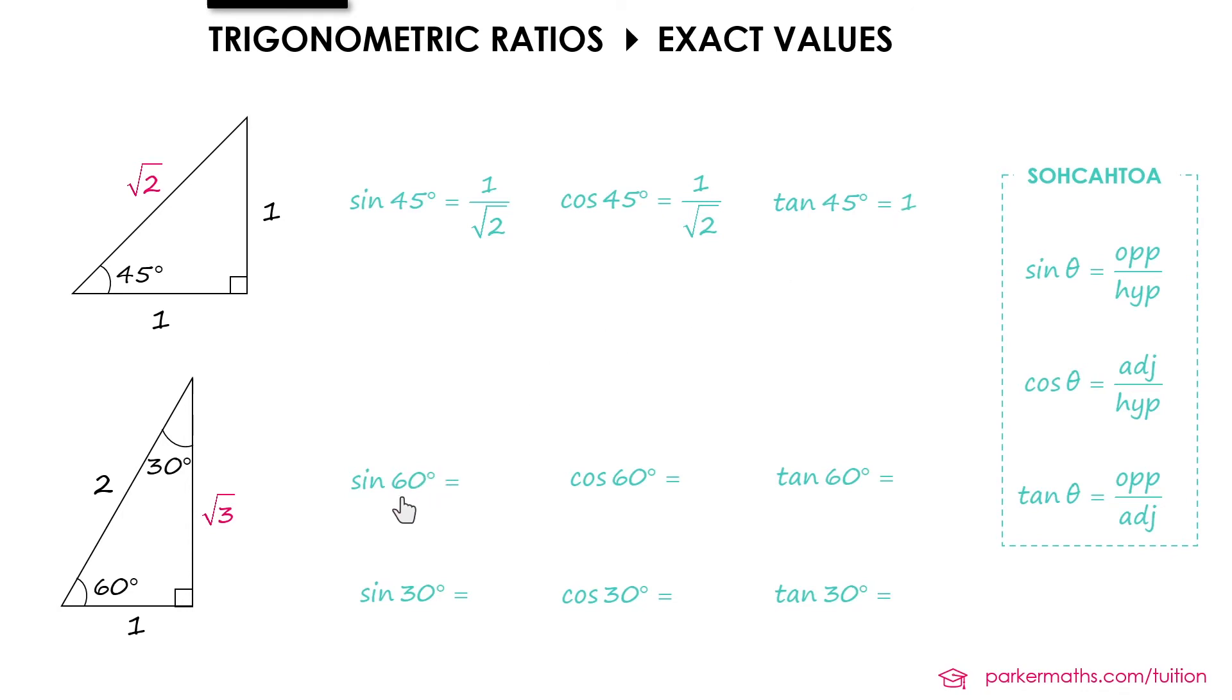In the second triangle to find sine 60 we need to do opposite over hypotenuse that gives us root 3 over 2. For cos 60 it's adjacent over hypotenuse that's a half. Tan 60 is opposite over adjacent so root 3 over 1 is just root 3.